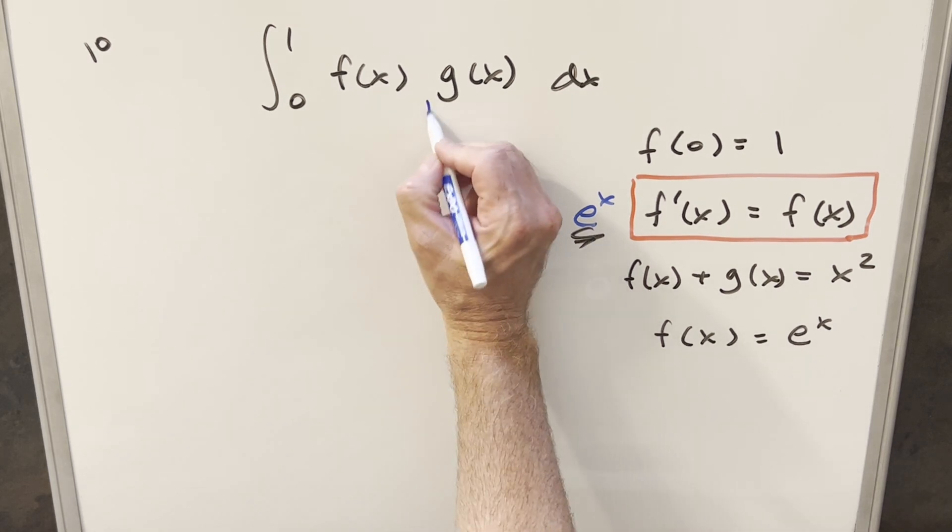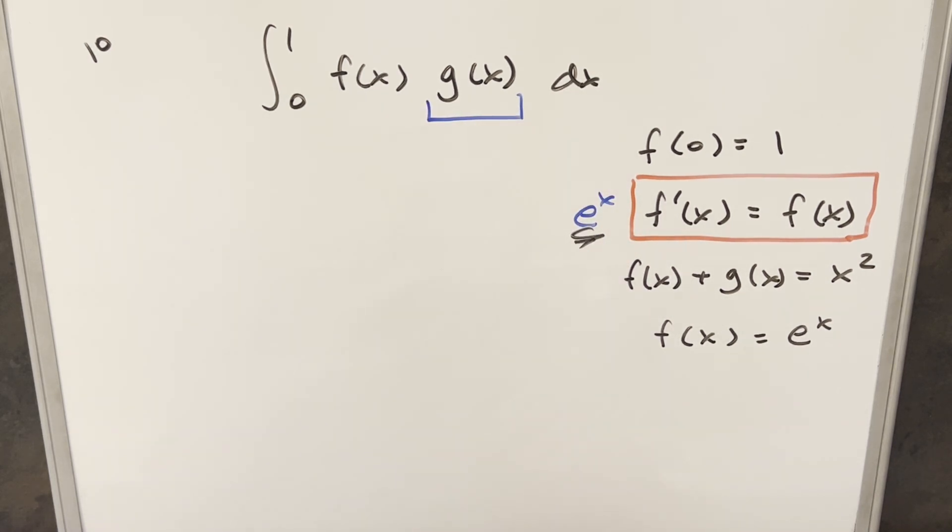Okay, so now that we have our f of x value, we just need to get our g of x for this equation right here in order to do our integral. And we can use this equation right here where we know f of x. So rearranging this, we can say that g of x is going to be equal to x squared minus f of x. And so we know our f of x value, so we can write our g of x value as just equal to x squared minus e to the x.